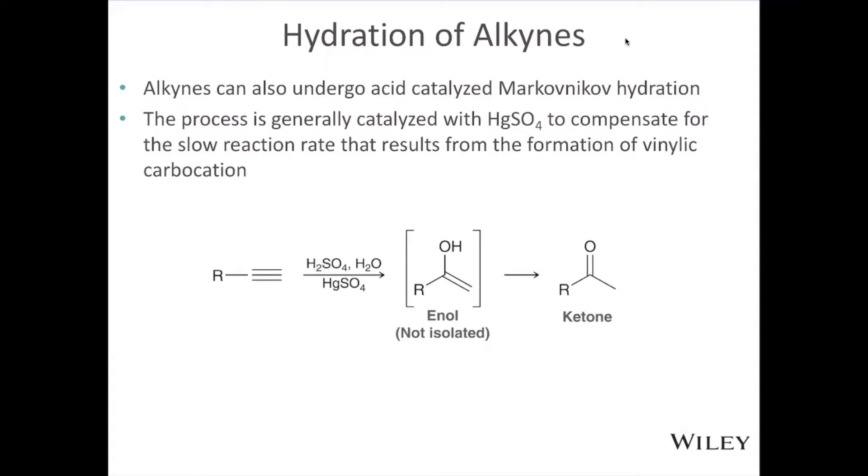The first step, however, is similar. Alkynes are able to undergo acid-catalyzed Markovnikov hydration. This process is catalyzed by mercury sulfate, so it's similar to oxymercuration demercuration. The reason we use mercury sulfate is because we're going to form a vinylic carbocation. Remember, that is a double bond with a positive charge, which is not very stable, so we need to be a little more aggressive. The reagents that we're going to use to pull this reaction off completely are sulfuric acid, water, and mercury sulfate.